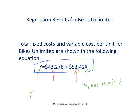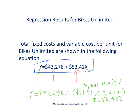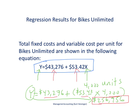To estimate total costs, we take y equals $43,276 and add the total variable cost, which is calculated by taking our variable cost per unit of $53.42 and multiplying it by 4,000 units. The total expected costs will be $256,956. That is $53.42 times 4,000 units plus $43,276, giving us $256,956 — our estimated production costs given a production level of 4,000 units.